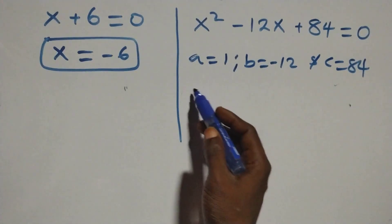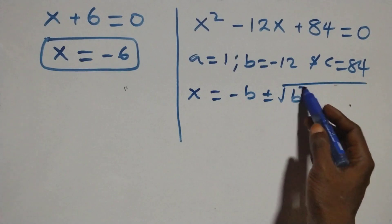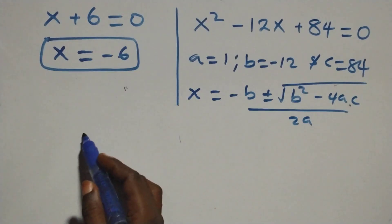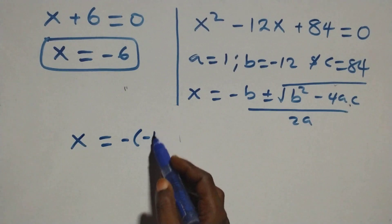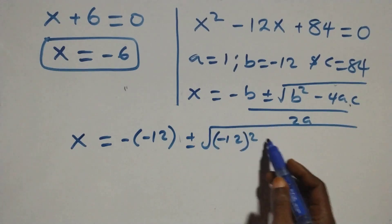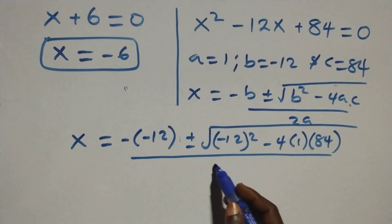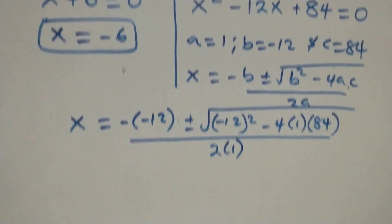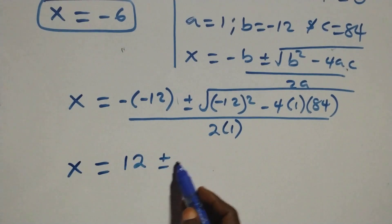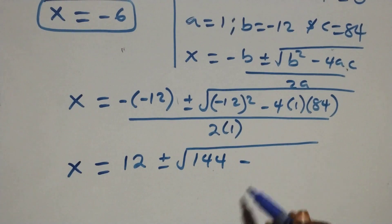Applying the quadratic formula: x = (−b ± √(b² − 4ac)) / 2a. That gives x = 12 ± √(144 − 4 × 1 × 84) / 2. We have 4 × 84 = 336, so it becomes x = 12 ± √(144 − 336) / 2.